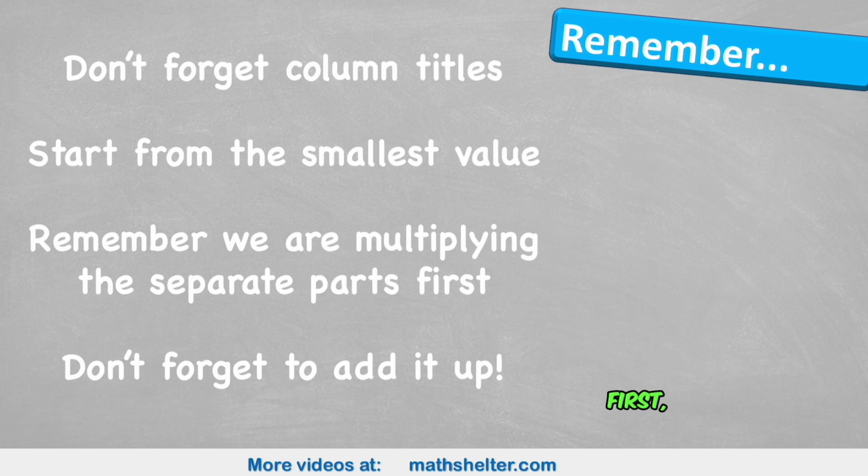So what do we need to remember? First, don't forget your column titles. Then we'll start with our smallest value. Remember, we are multiplying the separate parts. And then we mustn't forget to add it all up at the end.